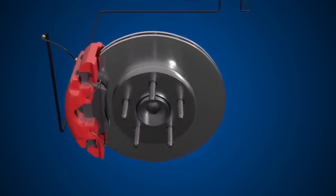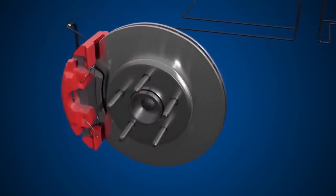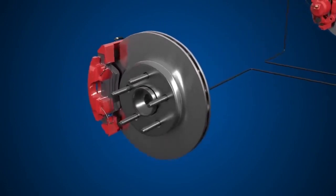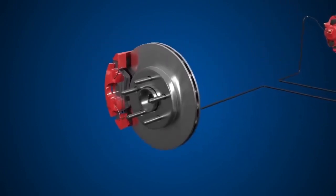They use calipers to squeeze a pair of brake pads against a brake disc, creating friction. The friction generated converts kinetic energy into heat, slowing the wheel.